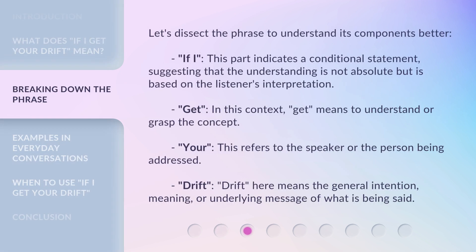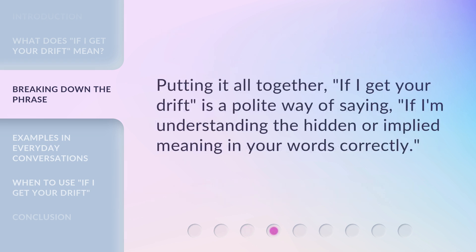Let's dissect the phrase to understand its components better. 'If I' — this part indicates a conditional statement, suggesting that the understanding is not absolute but is based on the listener's interpretation. 'Get' — in this context, means to understand or grasp the concept. 'Your' — refers to the speaker or the person being addressed. 'Drift' — here means the general intention, meaning, or underlying message of what is being said. Putting it all together, 'if I get your drift' is a polite way of saying, 'if I'm understanding the hidden or implied meaning in your words correctly.'